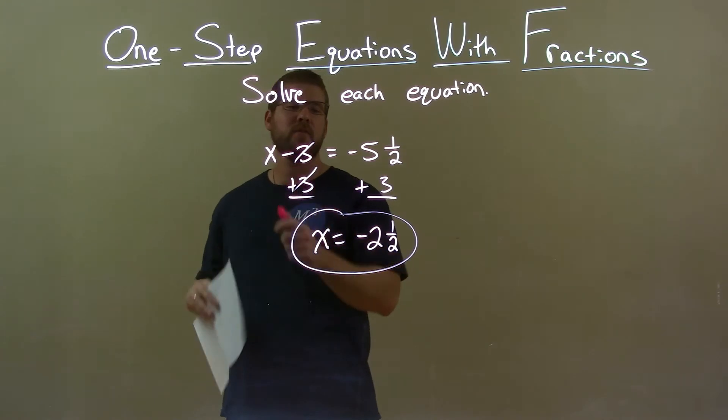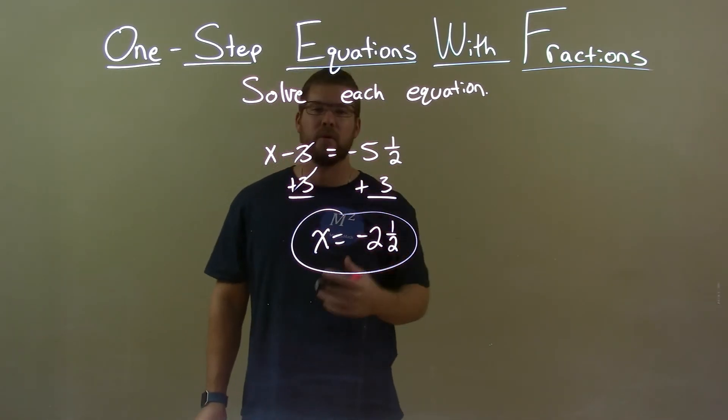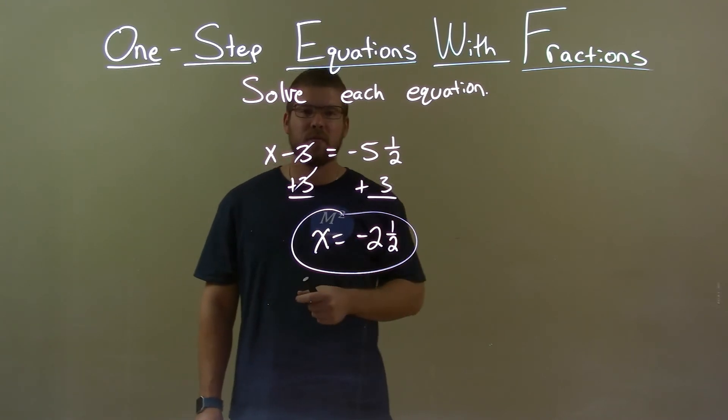Quick recap: we're given x minus 3 equals negative 5 and 1 half, and we can solve for x. Add 3 to both sides, giving us x by itself on the left, and negative 2 and 1 half on the right, our final answer.